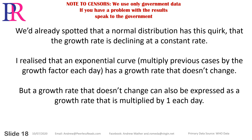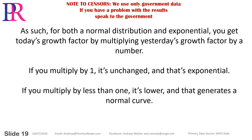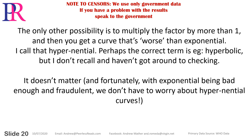We'd already spotted that a normal distribution has the quirk that the growth rate is declining at a constant rate. An exponential curve — multiplying previous cases by the growth factor each day — has a growth rate that doesn't change. But a constant growth rate can also be expressed as a growth rate multiplied by 1 each day. So for both normal and exponential curves, you get today's growth factor by multiplying yesterday's by a number: multiply by 1 and it's exponential; multiply by less than 1 and it generates a normal curve. Multiply by more than 1 and you get a curve worse than exponential — I call that hyponential.